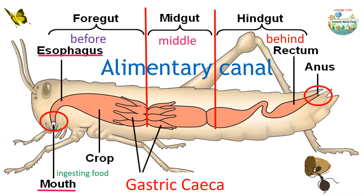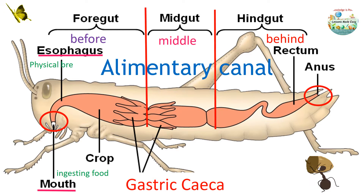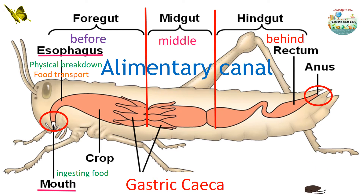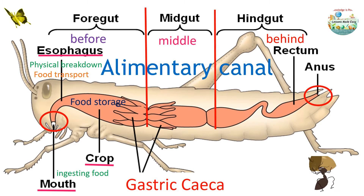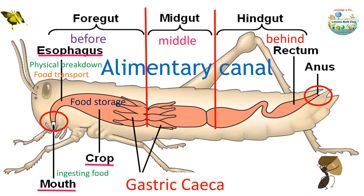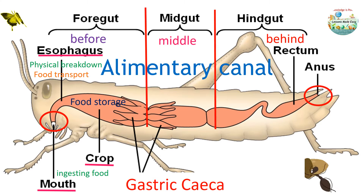The foregut includes the mouth for ingesting food, the esophagus for ingestion, physical breakdown, and transporting food, and the crop area for food storage. In other words, the foregut section is where food is ingested and physically broken down, and also serves as the place for food storage.